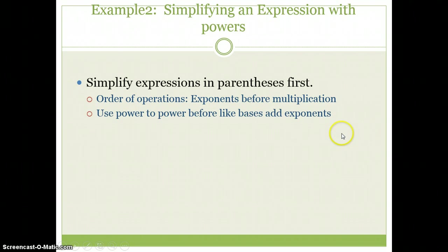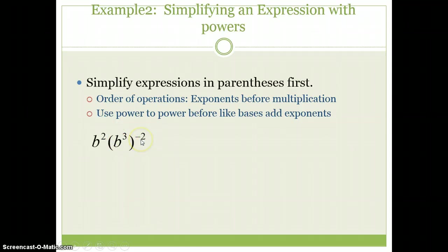Here we go. Let's take a look at an example two problem. I have b squared times b cubed to the negative second power. I'm going to follow this blue line, simplify expressions in parentheses first. The only thing in parentheses is b cubed. There's nothing I can do to b cubed. It's all by itself in there.